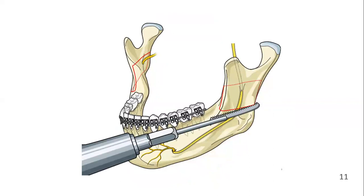The second corticotomy is made through the buccal cortex. It is also parallel to the occlusion but at the level of the alveolar crest. This corticotomy is again extended from the anterior to the posterior borders of the ramus.